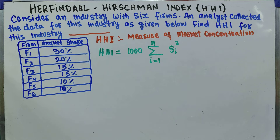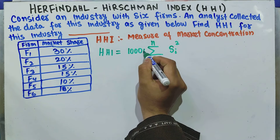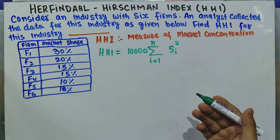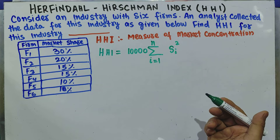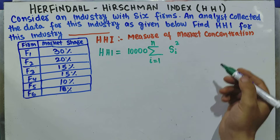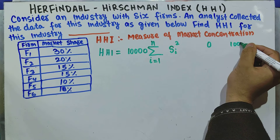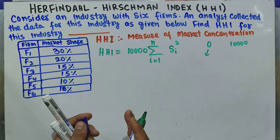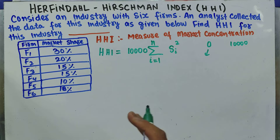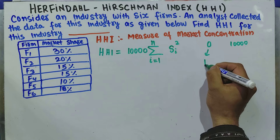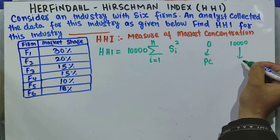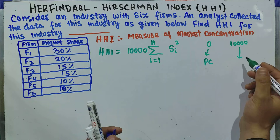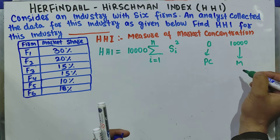When we calculate the Herfindahl-Hirschman Index, its value will lie between 0 and 10,000. If the value comes out to be 0, the market is closer to perfect competition. If its value comes out to be 10,000, the market is closer to monopoly, meaning we have only one firm.